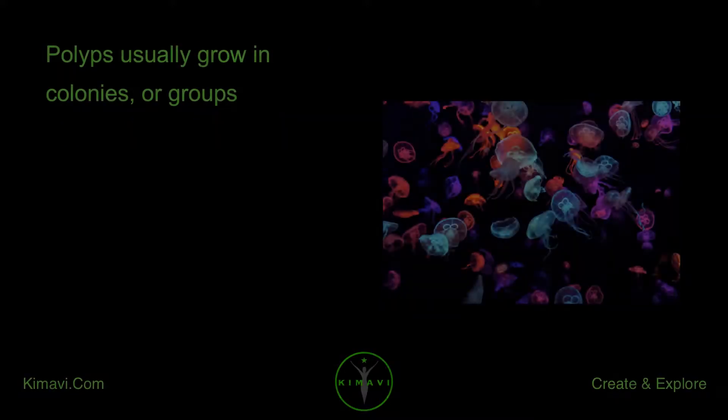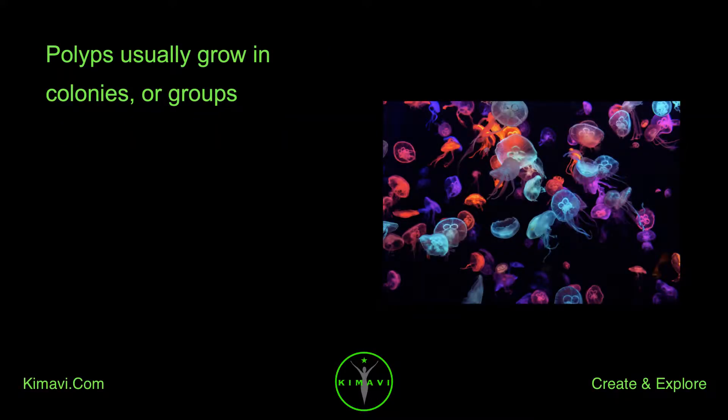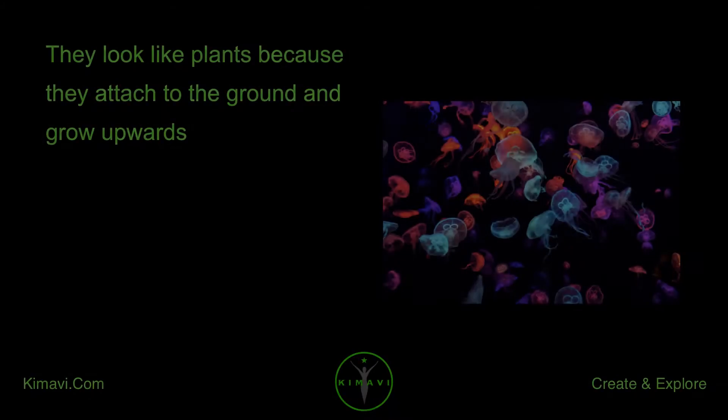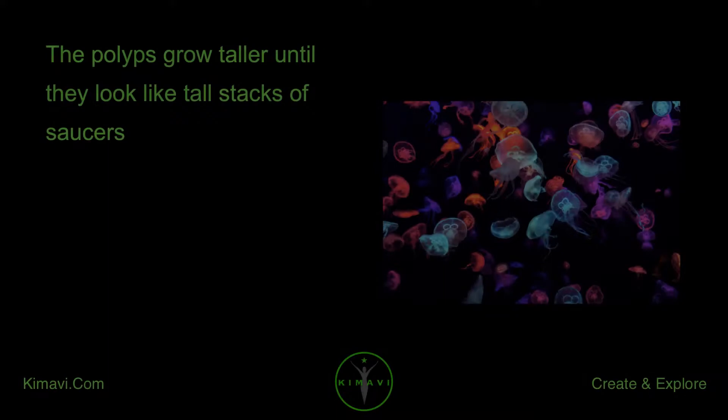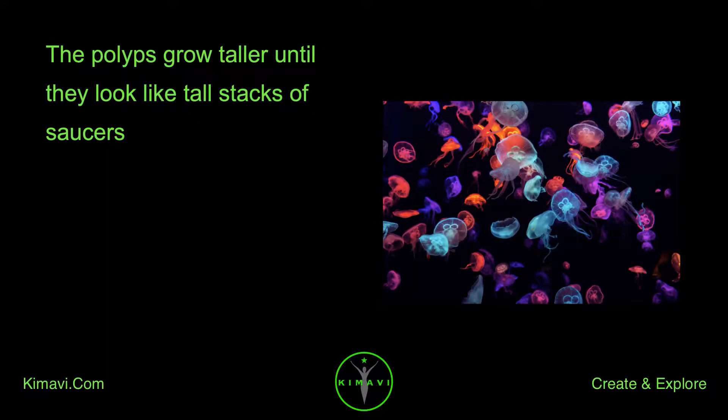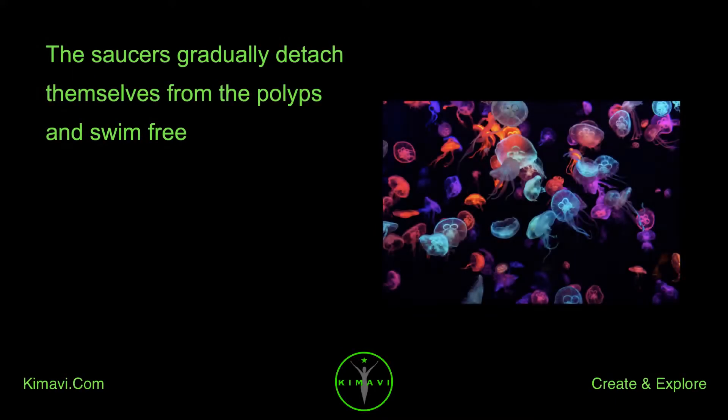Polyps usually grow in colonies or groups. They look like plants because they attach to the ground and grow upwards. The polyps grow taller until they look like tall stacks of saucers. The saucers gradually detach themselves from the polyps and swim free.